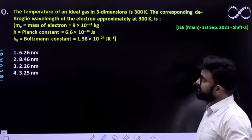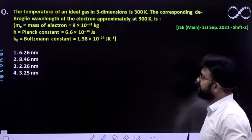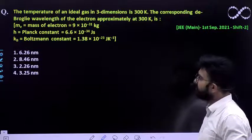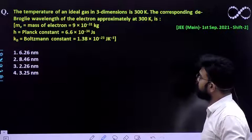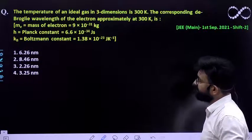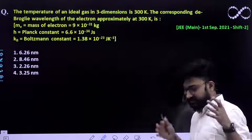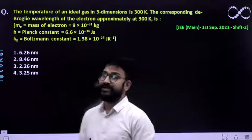The question says the temperature of an ideal gas in three dimensions is 300 Kelvin. The corresponding de Broglie wavelength of an electron approximately at 300 Kelvin is. So you need to find out the de Broglie wavelength of electron.